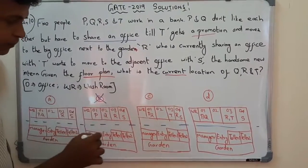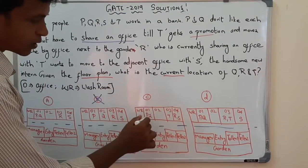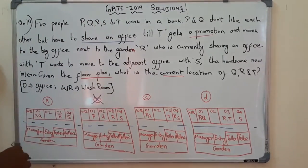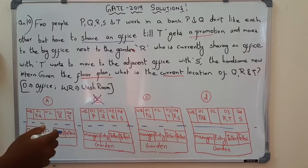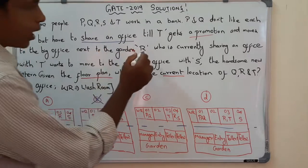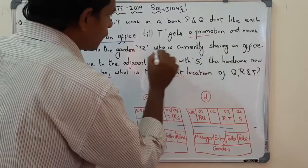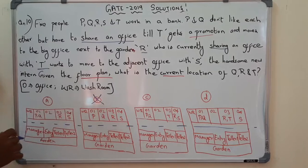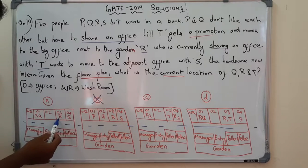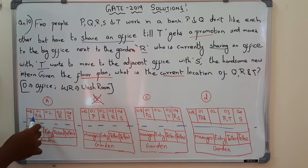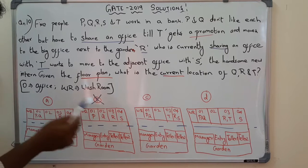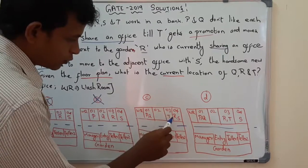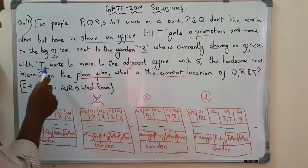In option C, P and Q are occupying the same office. In option D also, P and Q are occupying the same office. Now looking at the other conditions: R is currently sharing an office with T. In option A, R and S are in separate offices — although P and Q are in the same office, R and T are not sharing an office; they are in different offices.